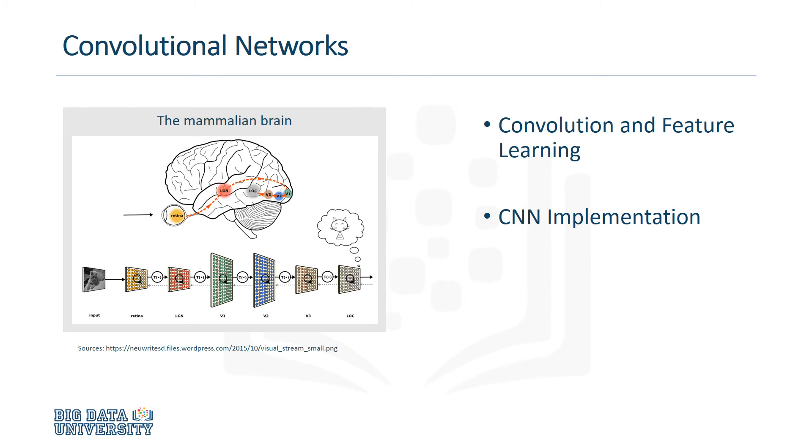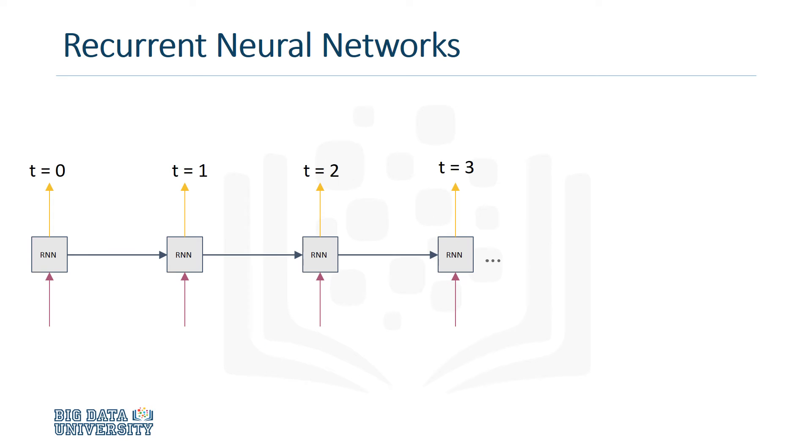As an example, we worked with the MNIST dataset of handwritten digits. In Module 3, we explained how sequential data posed a problem to traditional models, and how the recurrent neural network model was a better solution.